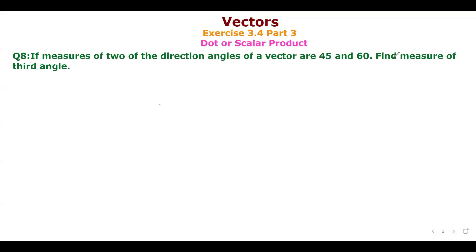In question number 8, we have been given that the measures of two of the direction angles of a vector are 45 degrees and 60 degrees. We assume the direction angles are alpha, beta, and gamma, which we have discussed in detail in the previous video.